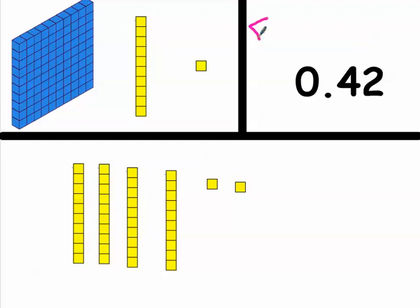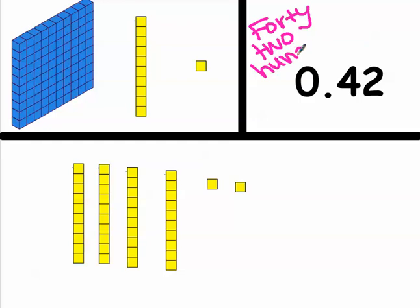Let's get practice writing words from our numbers. With decimals, write the whole number first. So: forty-two, then write the place value of the last digit. The 2 is in the hundredths, so write hundredths — not hundreds, but hundredths. Make sure to write the number first and then the place value of that last number.